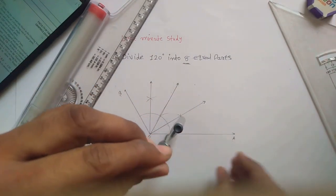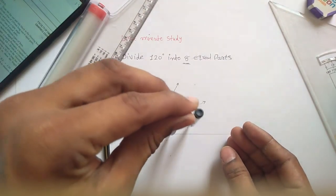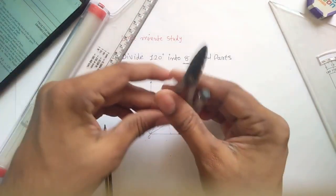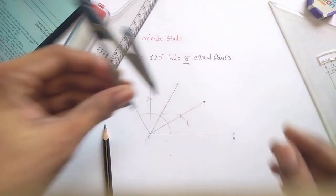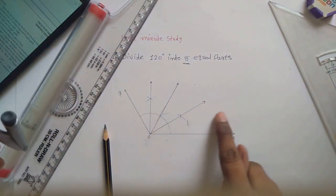Again, you have to maintain this distance, make an arc outside the curve like this, put the pointer over here and find the intersecting point. So this is your first division.